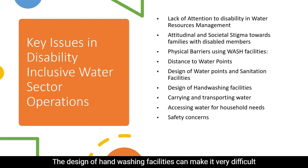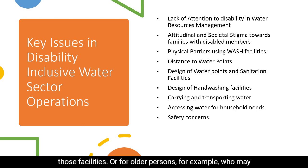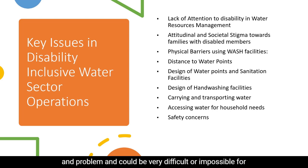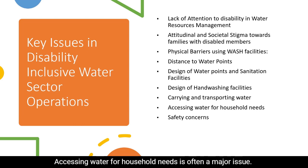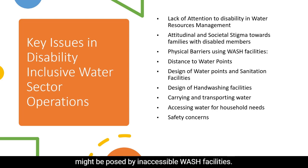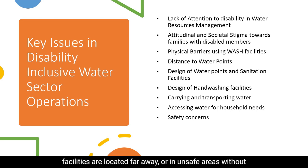The design of handwashing facilities can make access very difficult for persons with disabilities. Carrying and transporting water is a key issue and could be very difficult or impossible for persons with disabilities. Accessing water for household needs is often a major issue. And finally, safety concerns — think about the hazards posed by inaccessible WASH facilities, and exposure to violence and danger where WASH facilities are located far away or in unsafe areas without appropriate lighting.